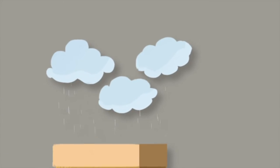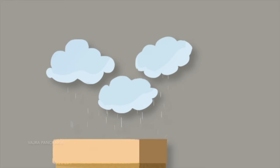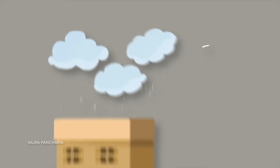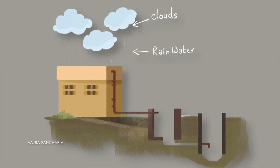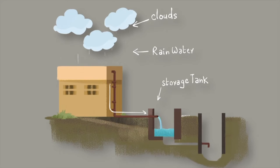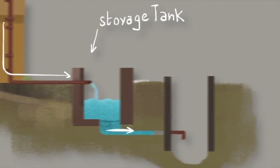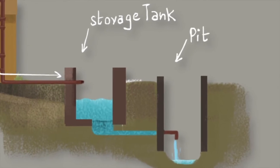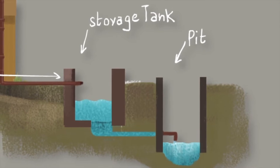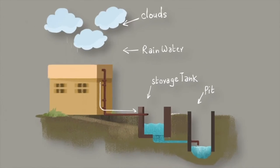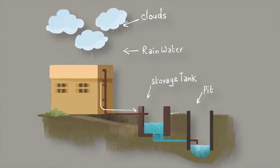One way to increase water resources is rainwater harvesting, which has been implemented in the region for millennia. When rainwater comes into contact with a surface, it is directed to a point where it flows into a barrel or cistern. A network of pipes connects the rain barrels or cisterns to the plumbing in the school, so that when water is needed for sanitation purposes, the harvested rainwater is used.